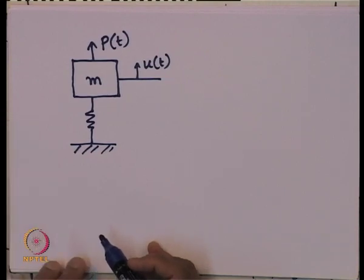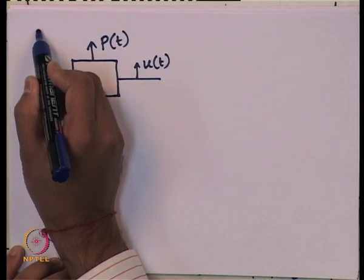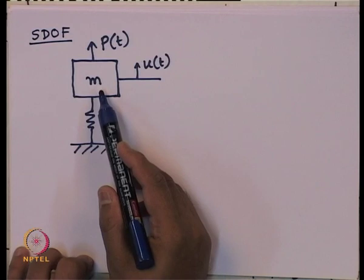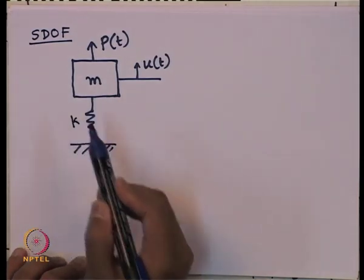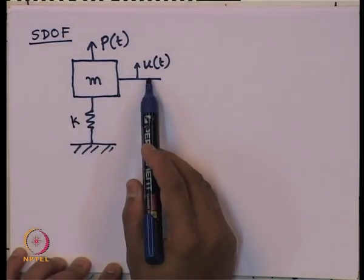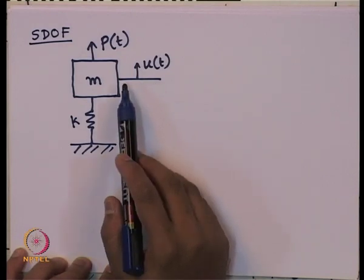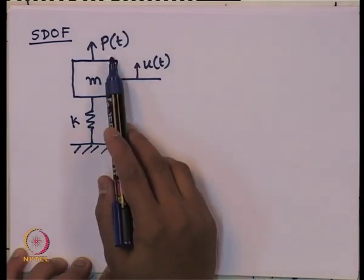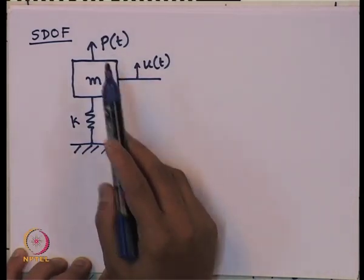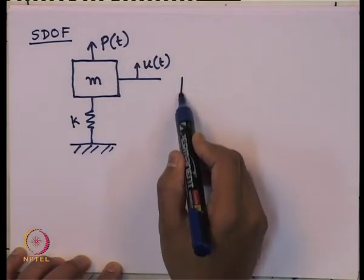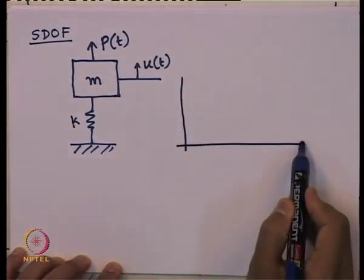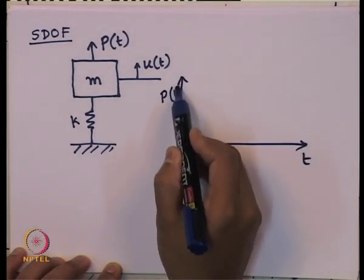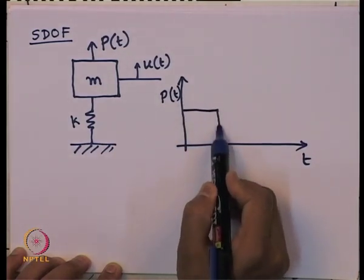Consider a single-degree-of-freedom system with mass m and spring constant k. Here, u(t) is the displacement defining the system's position at any instant of time, and p(t) is the externally applied dynamic load. Suppose p(t) varies with time — let us take a simple example first and then generalize it.